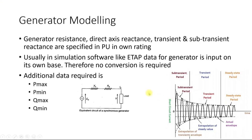Whenever you have to model a generator, you need to know all three of these reactances. For steady state analysis or load flow analysis, we only require the synchronous reactance or the direct axis reactance. But if you are performing short circuit analysis, we will usually consider sub-transient reactance, because during the sub-transient period the reactance is the lowest and the short circuit current will be highest. In simulation software like ETAP, generator data is input on its own base, so no conversion is required.